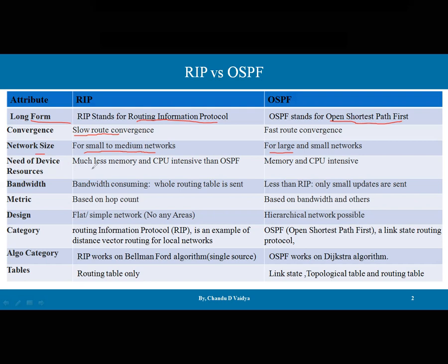Regarding device resources, RIP is much less memory and CPU intensive than OSPF. OSPF is CPU and memory intensive because it has to process many tables — neighbor tables, topological tables, and routing tables — and it sends information on a trigger basis, requiring more powerful resources to process those updates.